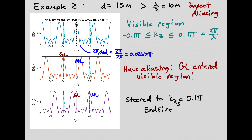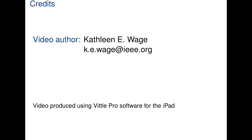This array with 15-meter spacing can be steered over only a narrow range of angles near broadside without a grating lobe entering the visible region. Once we steer far enough off broadside, the grating lobe enters the visible region and aliasing occurs. This video has introduced basic properties of the beam pattern including main lobe width, grating lobes, the visible region, and spatial aliasing. Check out the other videos on YouTube for more information. Thanks for listening.